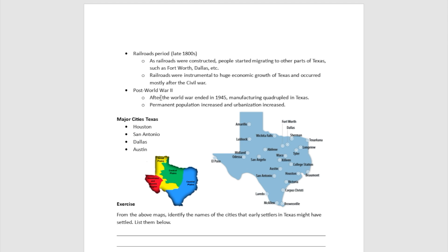Right after World War II ended in 1945, manufacturing like quadrupled in Texas. Permanent population increased and urbanization increased as well as a result of it.